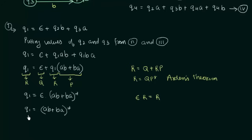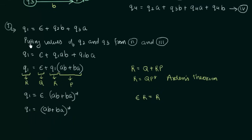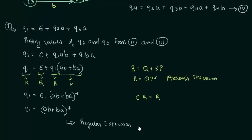Here Q1 is our final state. If you check the DFA, Q1 was our final state and we already got the expression for the final state in terms of inputs A and B. So this is the required regular expression for the given DFA: (AB plus BA)*. I hope this was clear to you. Thank you for watching and see you in the next one.